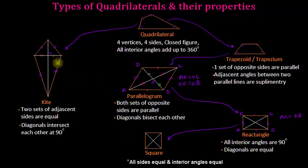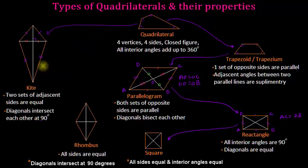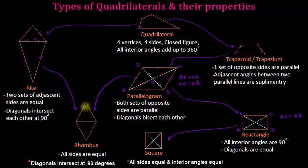There are two paths to a rhombus: making all sides of the kite equal, or making all sides of the parallelogram equal — both give a rhombus. The rhombus inherits all properties of both the kite and the parallelogram: both diagonals intersect at 90 degrees, both diagonals bisect each other, and all sides are equal.